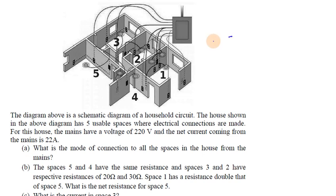The diagram above is a schematic diagram of a household circuit. The house shown in the diagram has 5 usable spaces, with a lounge space where the electrical connections are made. For this house, the mains have a voltage of 220 volts.